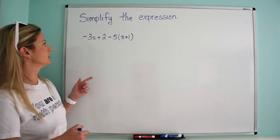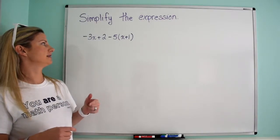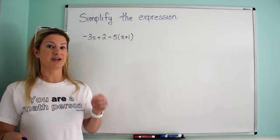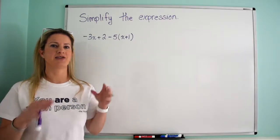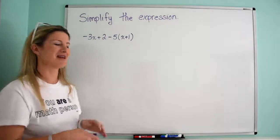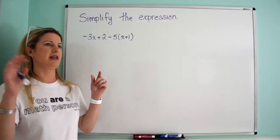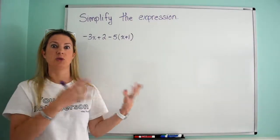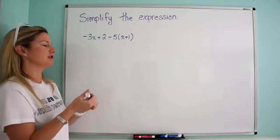negative 3x plus 2 minus 5 times the quantity x plus 1. And I'm actually going to do it in two ways. So this will be way 1, and then you can see way 2 after that. And actually, if you check in the description of the video, I'll have a link to where way 2 starts, if you want to skip directly to way 2.